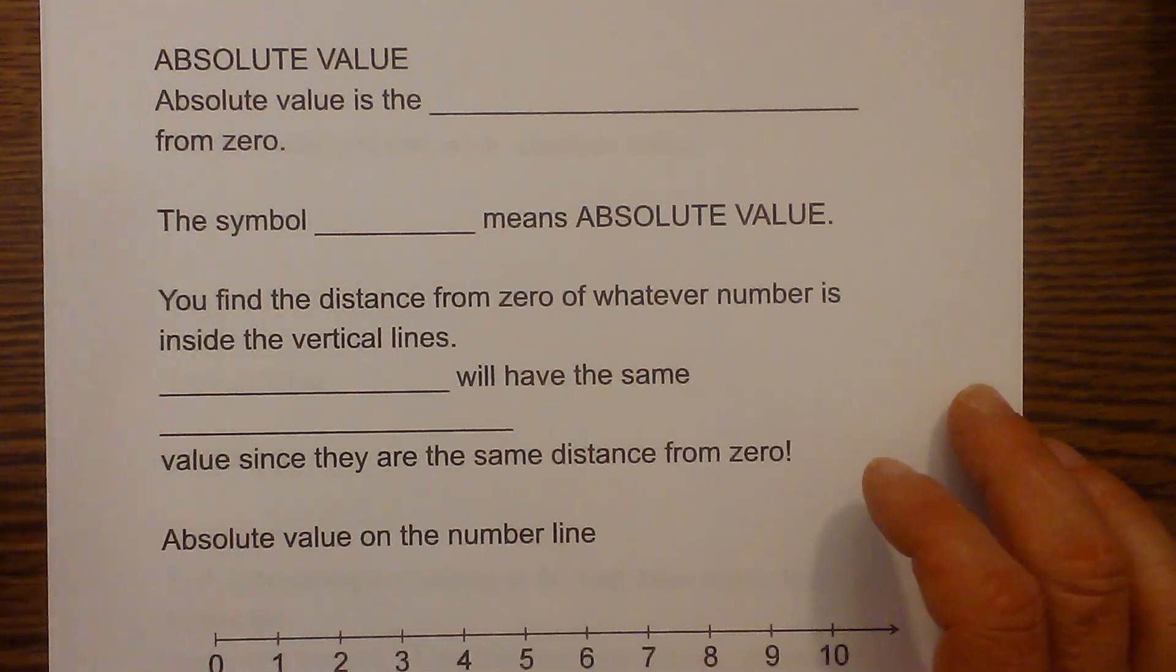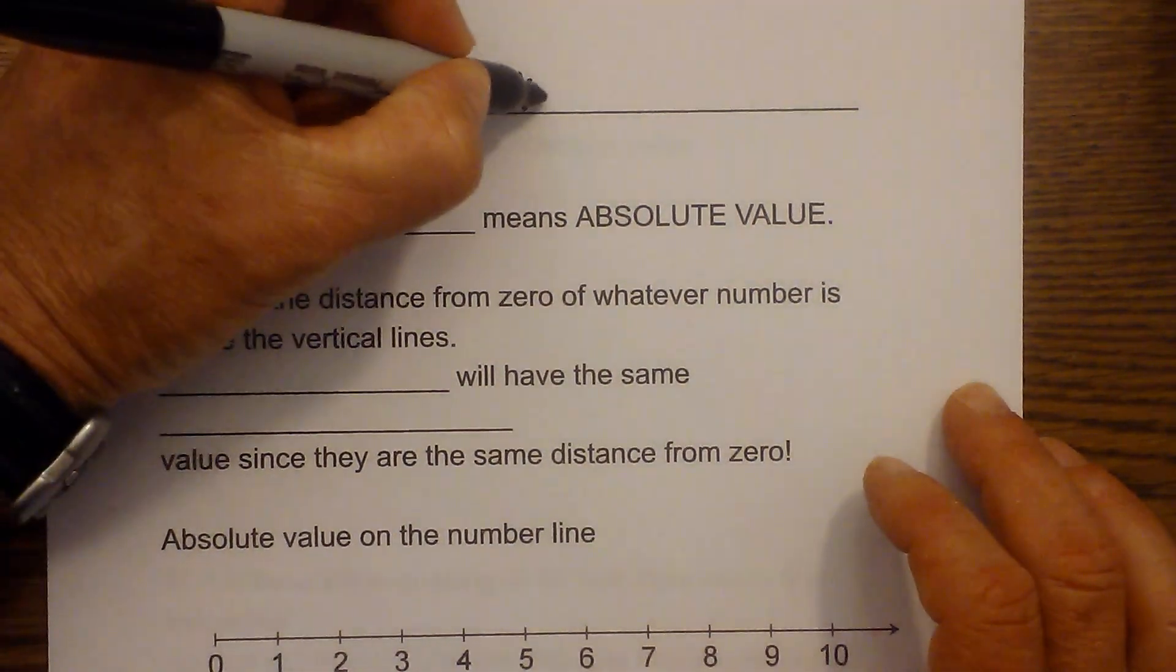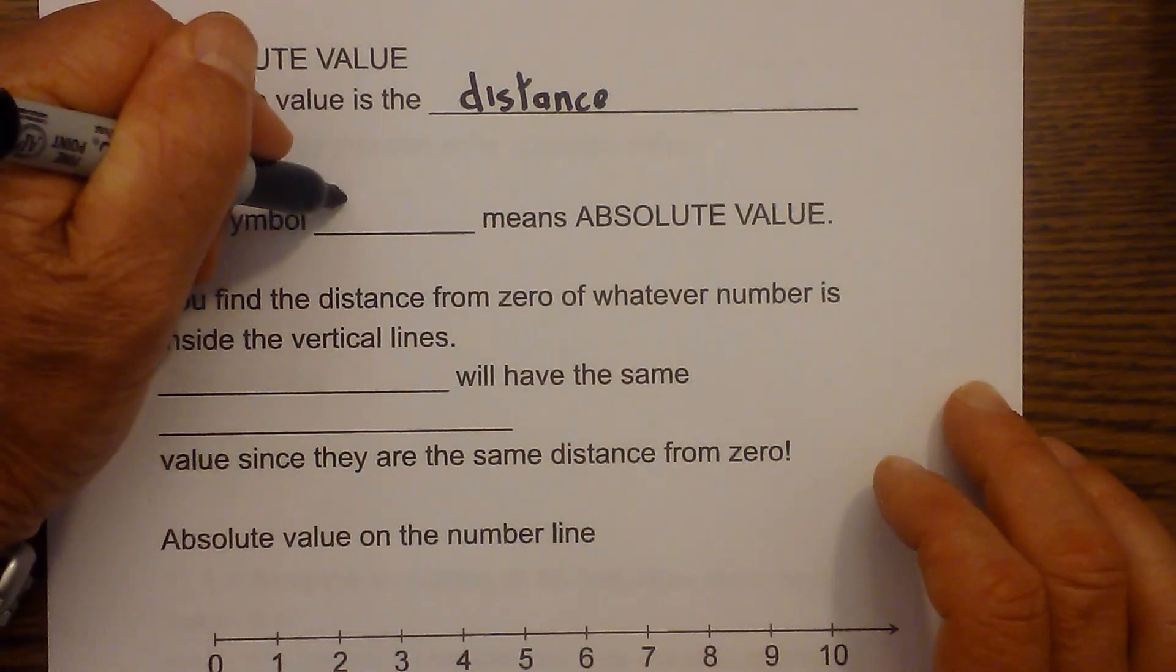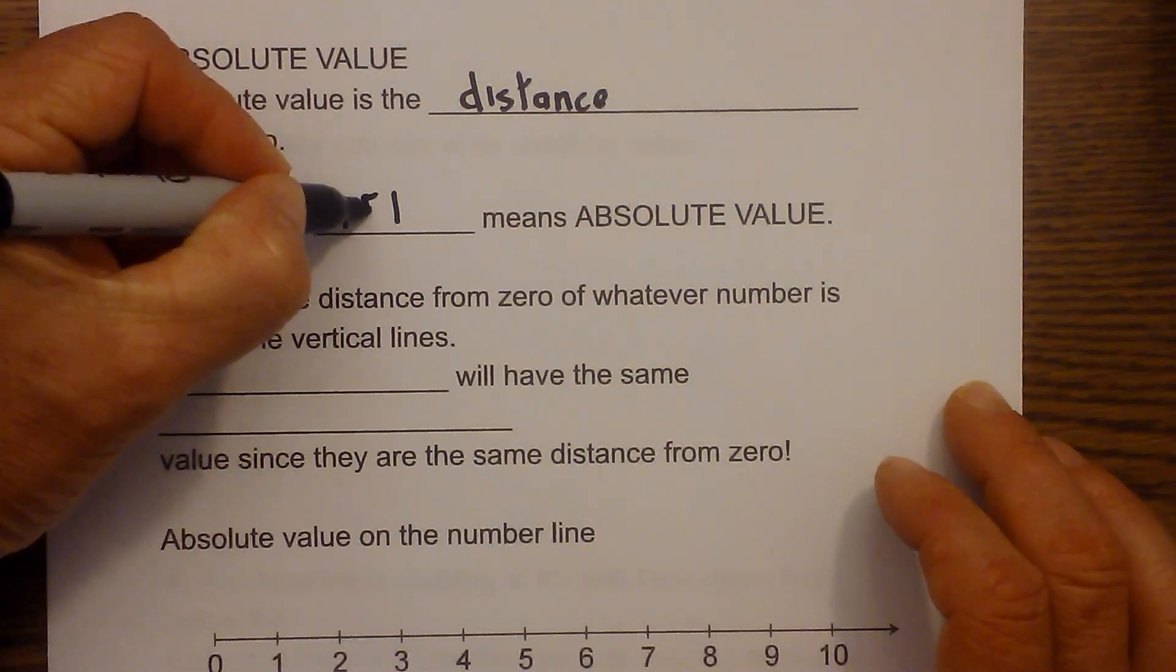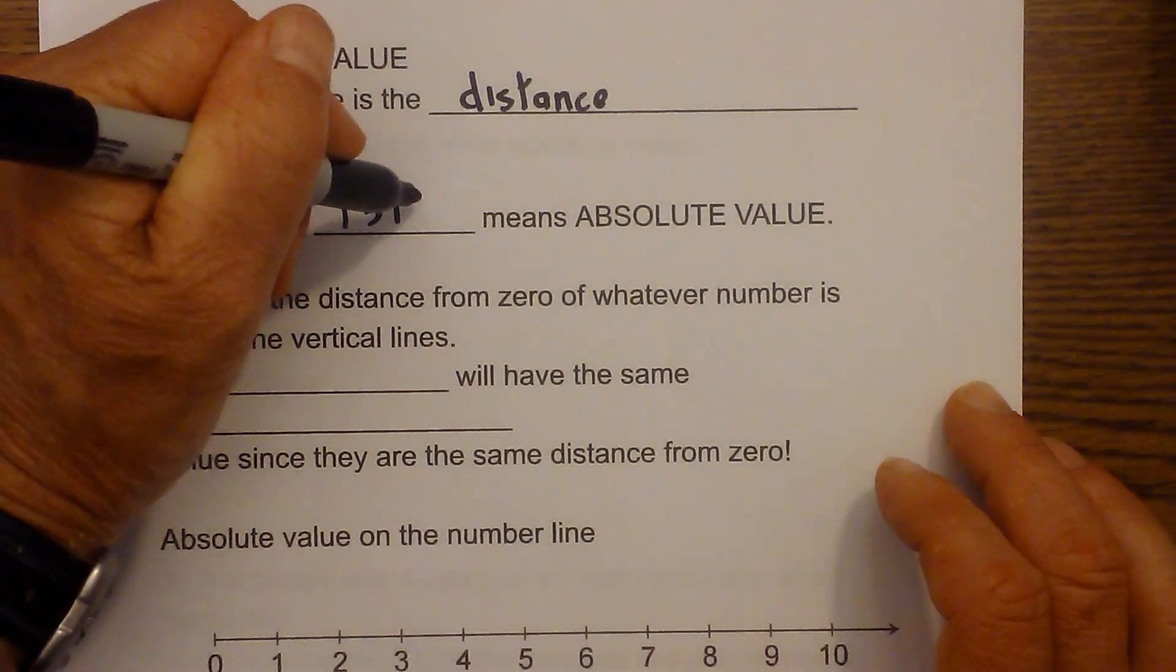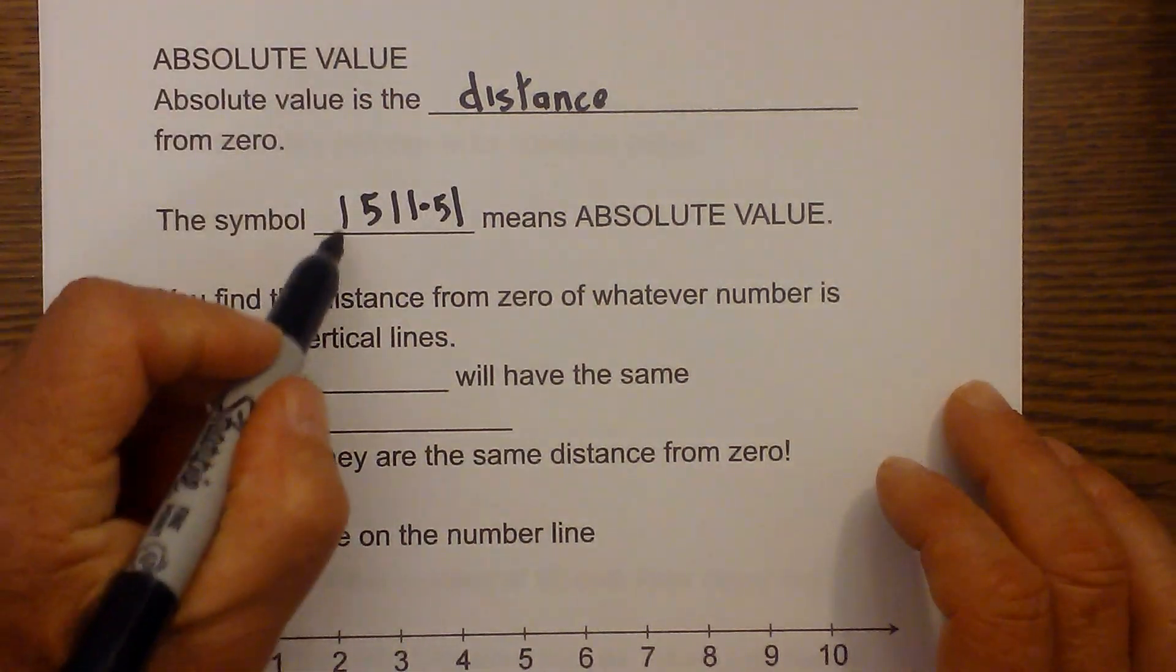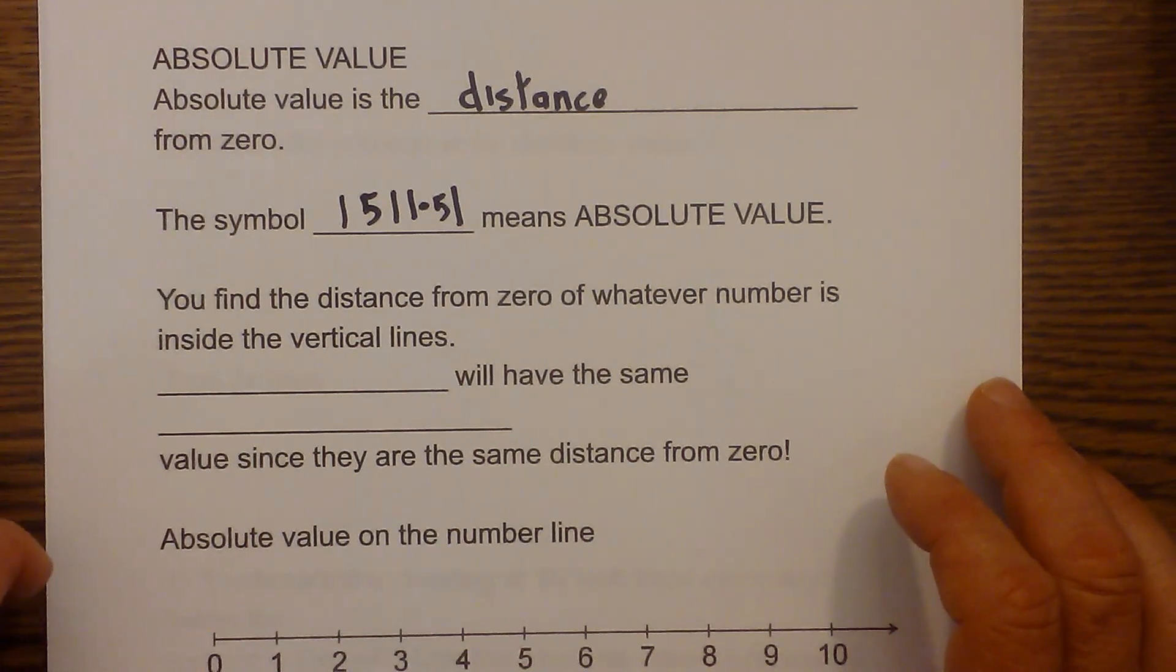The absolute value is the distance from zero. The way you write absolute value is you use two lines like this. So the absolute value of 5, you would write 5 in between, or negative 5 would be negative 5. You use these two symbols. You find the distance from zero of whatever number is inside the vertical lines.